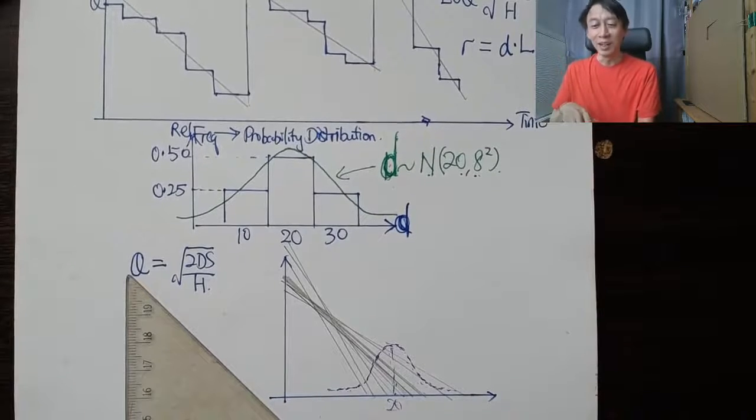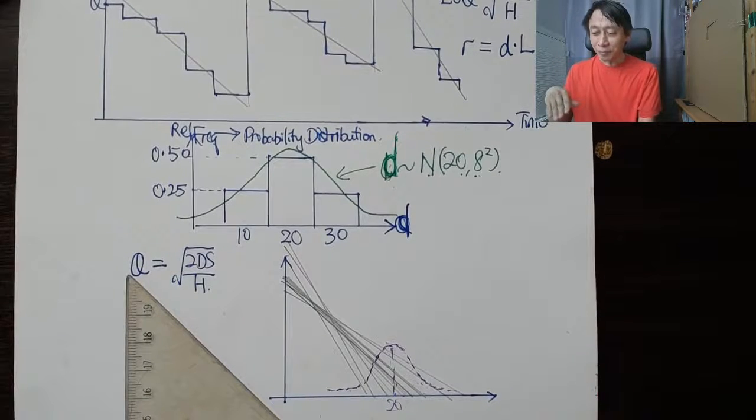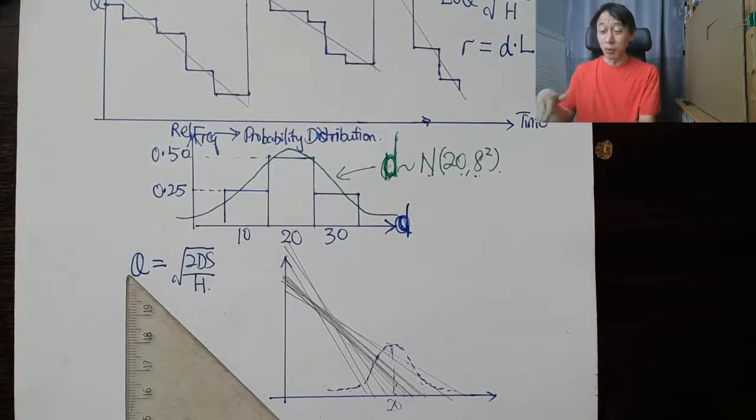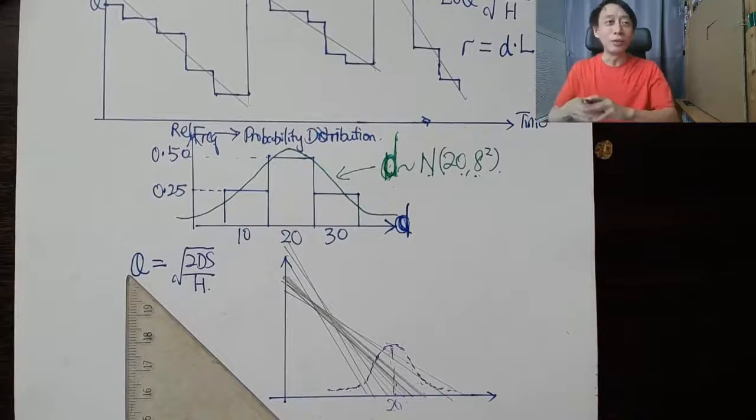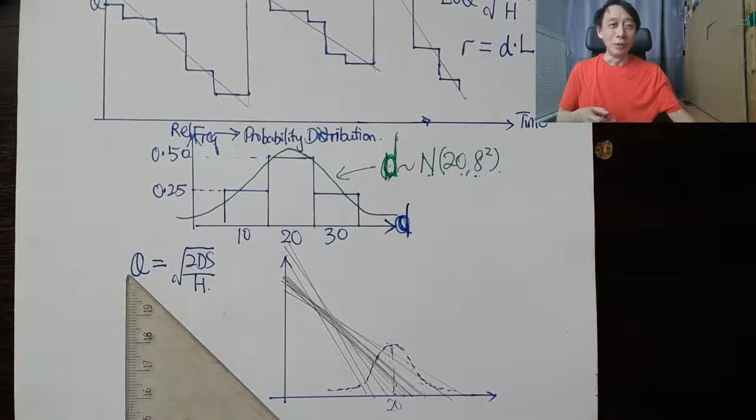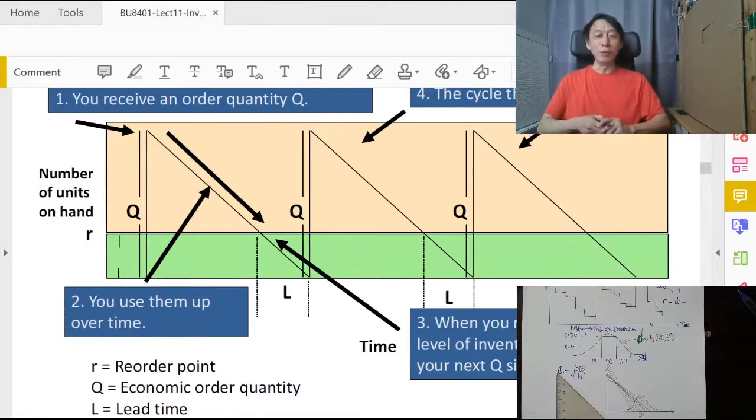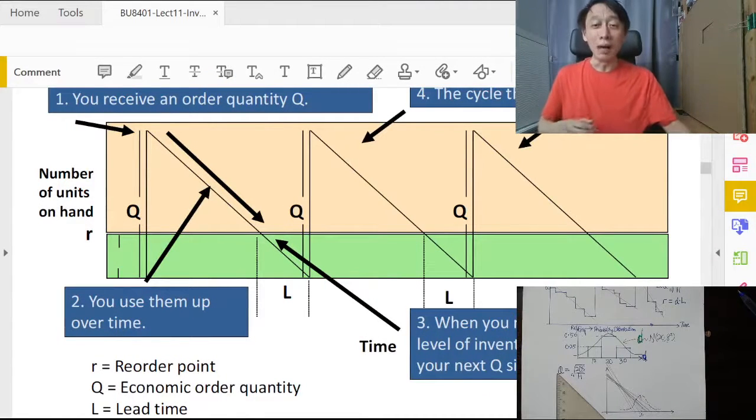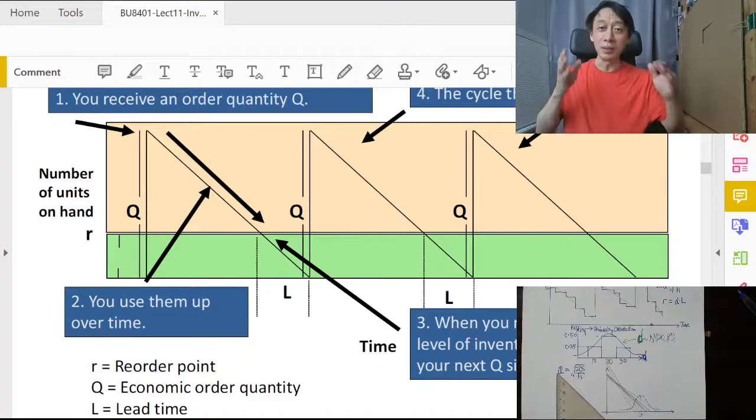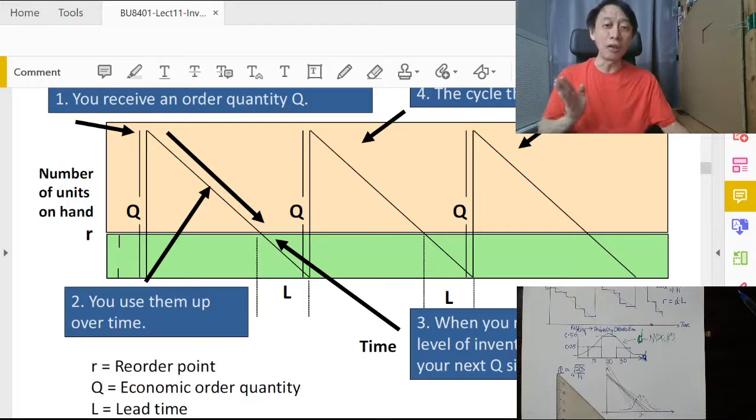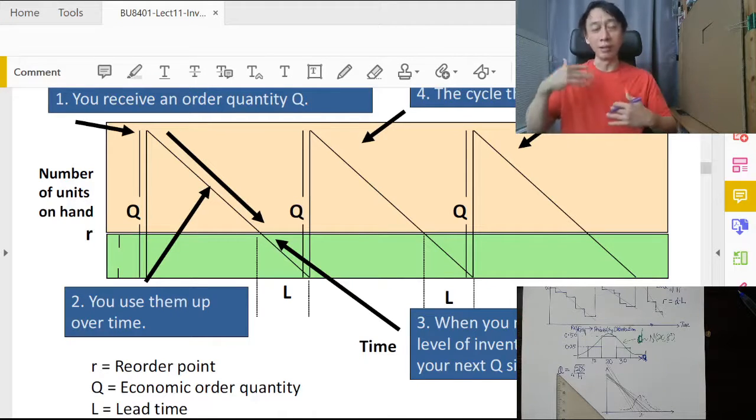But when we do that also, we are falling back on to our standard EOQ formula, because now the zigzag shape has given way to a smooth triangle. And because the gradient is fixed, all triangles also share the same shape. They have the same width, they have the same height.